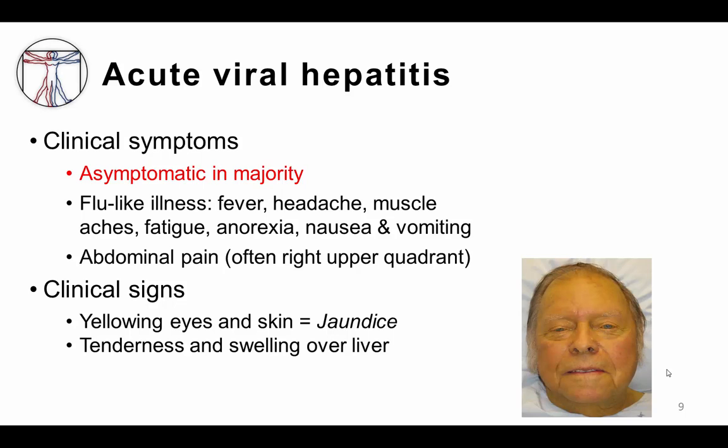Some patients will have abdominal pain, often in the right upper quadrant, that is related to liver swelling. On exam, some patients may have yellowing of the eyes and skin known as jaundice. This finding is related to elevated levels of bilirubin released from damaged biliary cells and due to the injured liver's inability to process bilirubin effectively. You may also be able to detect a swollen liver on exam, and the area may be somewhat tender to palpation.